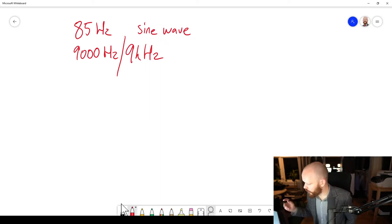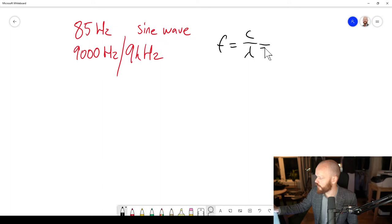And if you want to find out what kind of wavelength do these frequencies correspond to, the frequency is defined as speed of sound divided by wavelength. But we want to find the wavelength, so it's going to be lambda equals c over f.